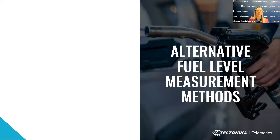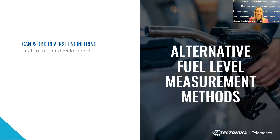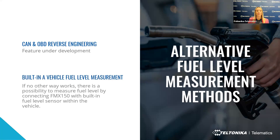If your specific vehicle is not yet included in the fuel level supporting list, don't worry – we have alternatives. One option is the joint CAN and OBD reverse engineering method, which enables us to send requests to the CAN line and retrieve fuel level information. By obtaining this data, we can add your vehicle to the fuel level supporting list. No additional equipment other than the FMX 150 is required. This method allows fuel level measurement from the vehicle's built-in sensor, though it makes reverse engineering more complex and should only be used when other methods do not work.